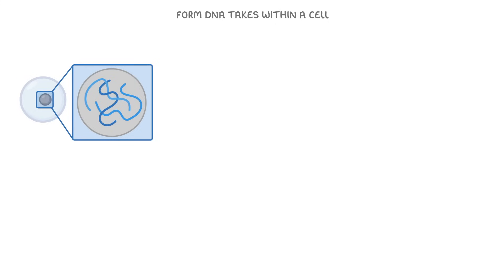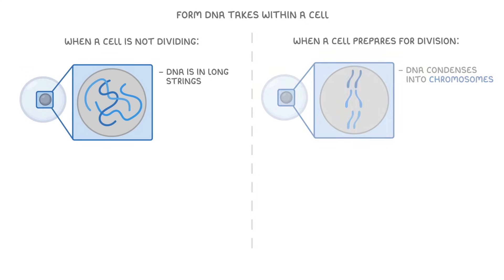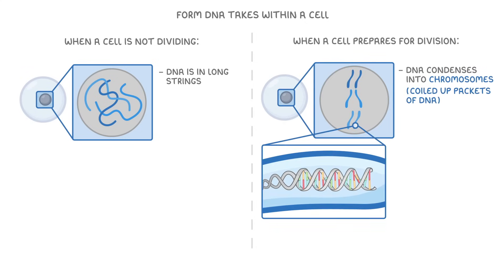In order to understand the next stage, it's worth taking a closer look at the form that DNA takes within a cell. Usually, when a cell is not dividing and is just going about its normal functions, the DNA is spread out in long strings. However, once the cell starts to prepare for division, its DNA condenses into chromosomes, which are basically coiled up packets of DNA.